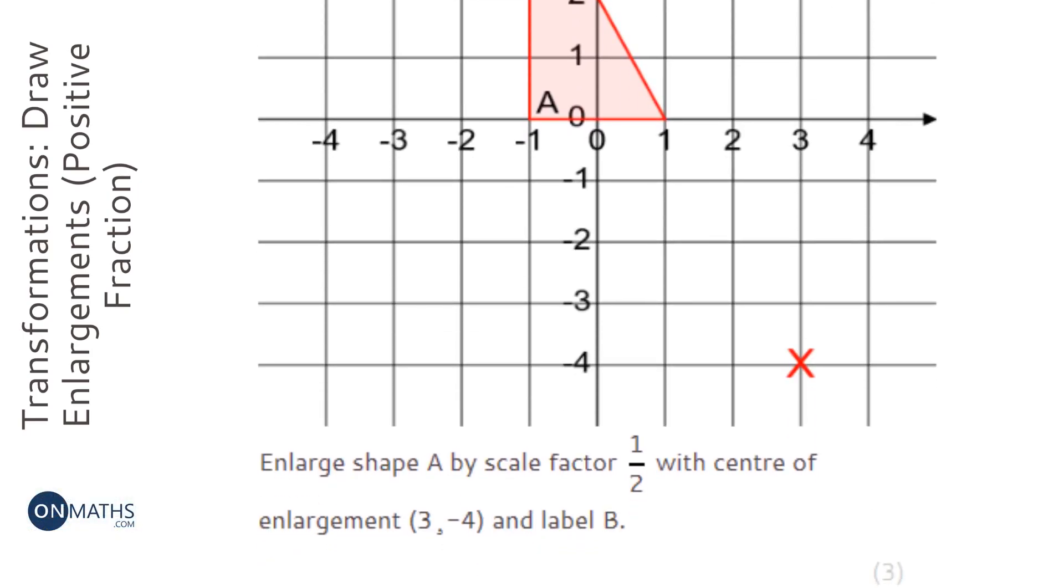Okay, so this question tells us to enlarge shape A by scale factor 1/2 with the center of enlargement at (3, -4), and then label the shape B.